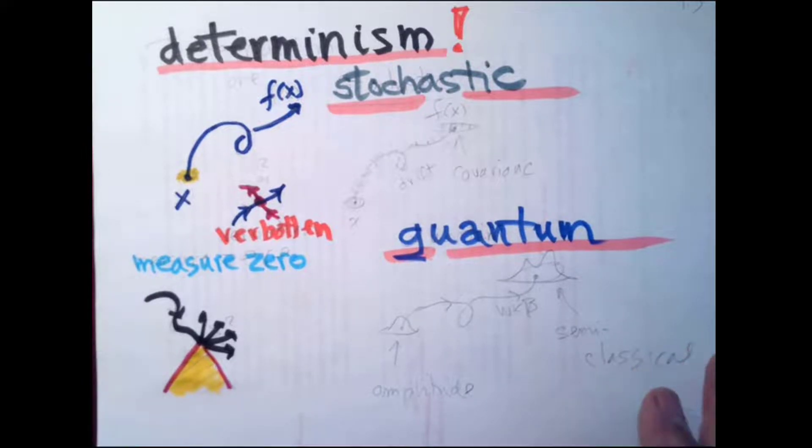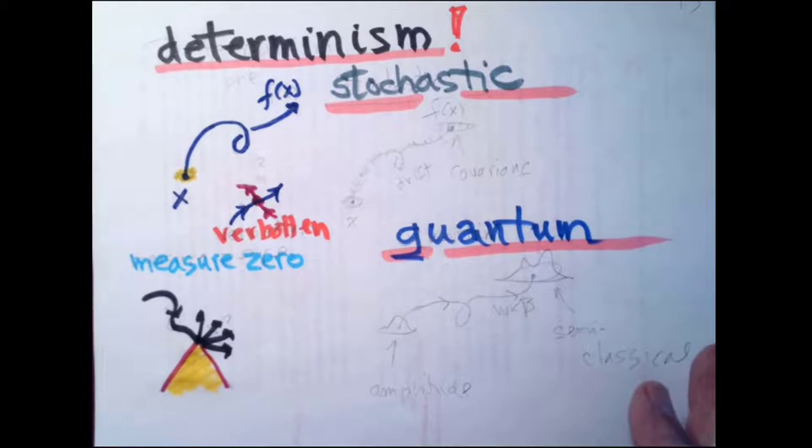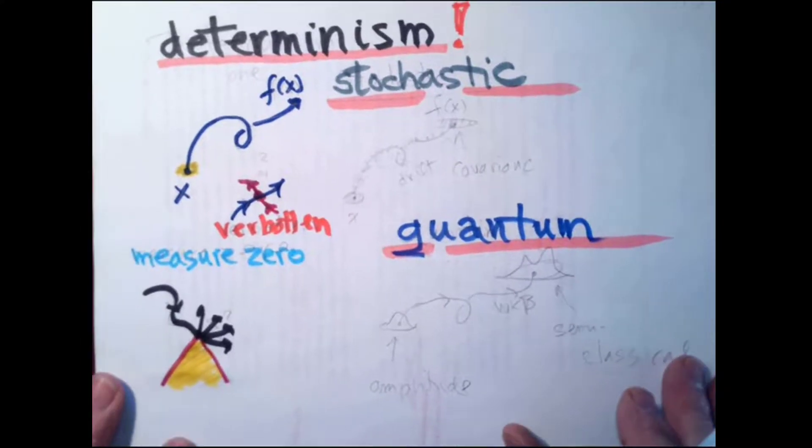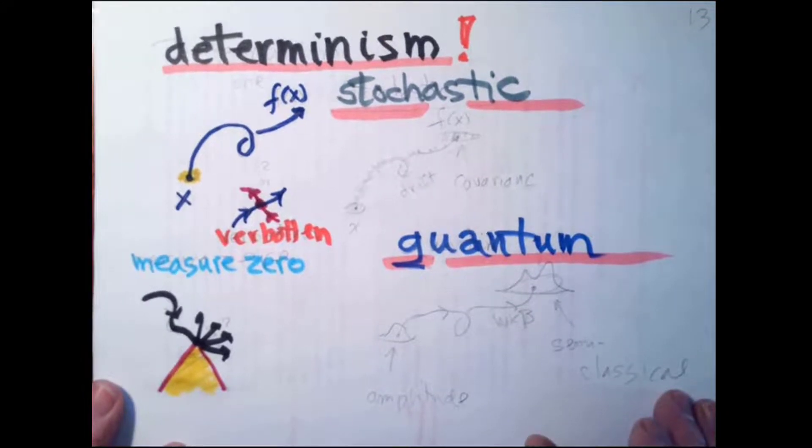We know determinism is a lie because there are no deterministic systems in nature. Everything that you ever do